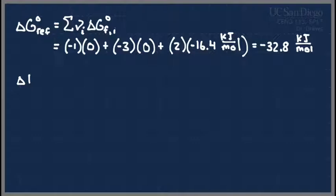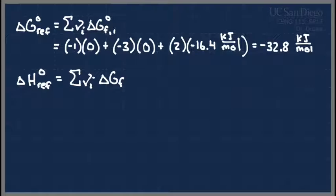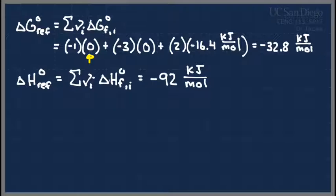For the enthalpy of reaction, delta H°_rxn, same idea — I look up the delta H°_f values instead of delta G's. Doing that math gives minus 92 kJ/mol. There are no real shortcuts; you just have to tabulate them. I always mess up the signs if I don't use parentheses, so you'll almost always see me do the parentheses thing. Then we plug those values into our expressions for K0 and K1.